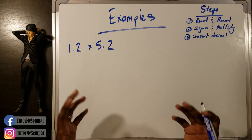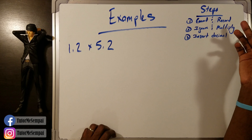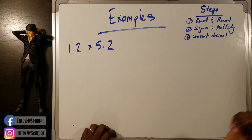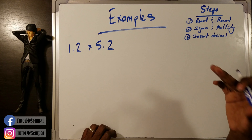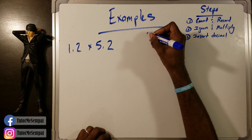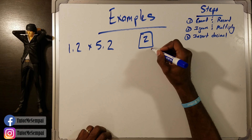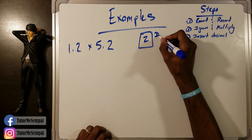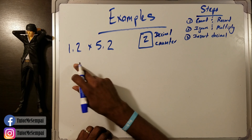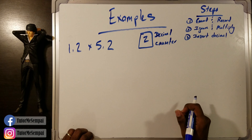Let's look at this with an example — 1.2 times 5.2. We have our steps here. Count and record is step one, ignore and multiply is step two, and insert decimal is step three. We've already done step one: this is going to be two decimal spots. So we put a box here — this is our decimal counter — and we have two spots.